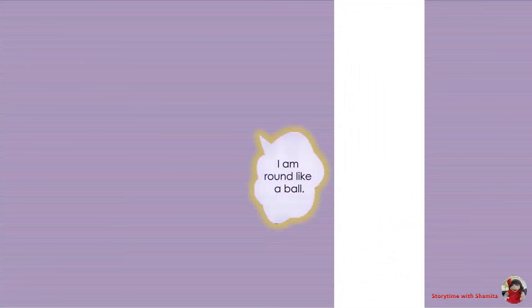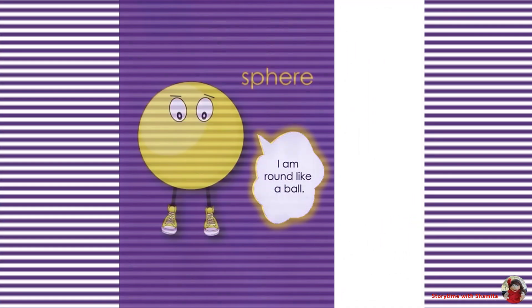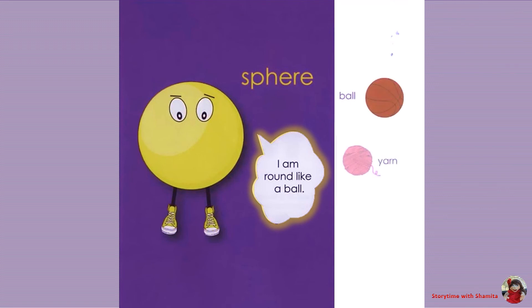I am round like a ball. Sphere. Examples: ball, yarn, earth.